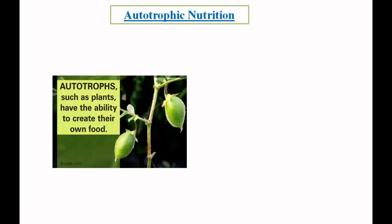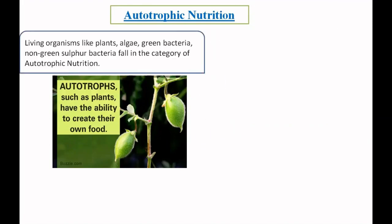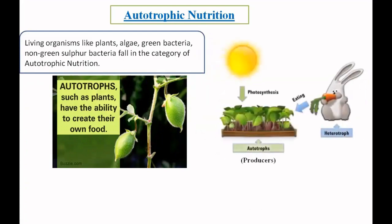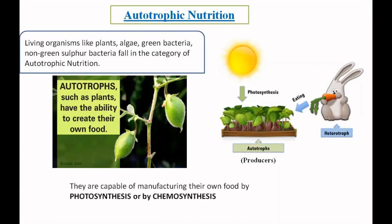Along with plants, there are certain other living organisms which fall in the category of autotrophic nutrition — those are algae, green bacteria, and non-green sulfur bacteria. As these autotrophs can prepare their own food, they are also known as producers in a food chain. They are capable of manufacturing their own food either by the process of photosynthesis or by chemosynthesis.